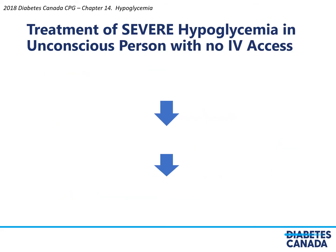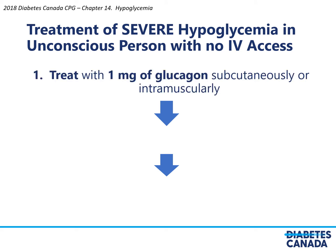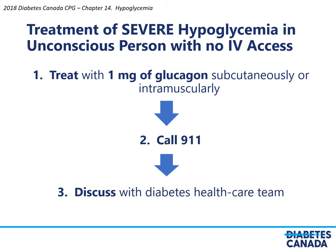In the case of severe hypoglycemia in an unconscious person with no intravenous access, treatment with 1 mg of glucagon subcutaneously or intramuscularly would be helpful, followed by calling 911 and discussing the event with the diabetes healthcare team.